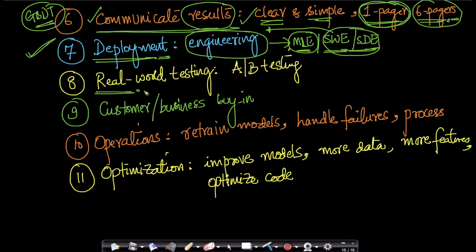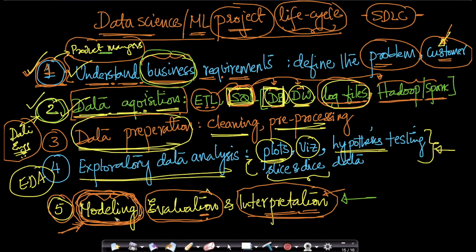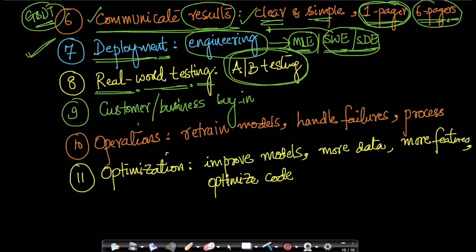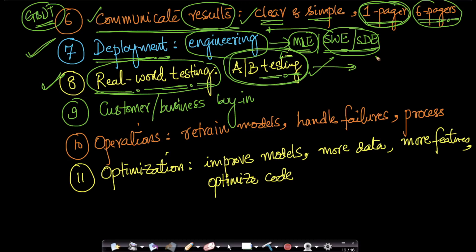After deploying your model, you perform real-world A/B testing. You spend considerable time in A/B testing to see if the results obtained during data analysis and modeling are truly meaningful in a production environment. We have a very detailed discussion about A/B testing in our course. Here you measure the real business impact when your model is shown to end customers in production.